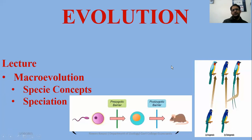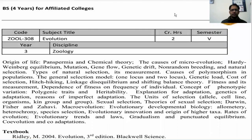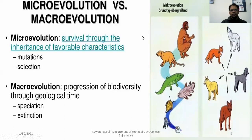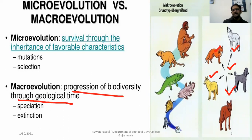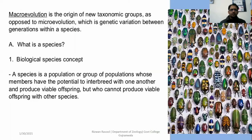In today's portion, the topic of discussion is macro evolution, the concept of species as well as speciation and its types. This macro evolution is part of your syllabus. Micro evolution is survival through inheritance of favorable characteristics — mutation and selection within the species through modification or developing specific different breeds. Macro evolution is a progression of biodiversity through geological time, speciation as well as extinction, and the origin of new taxonomic groups, as opposed to micro evolution.